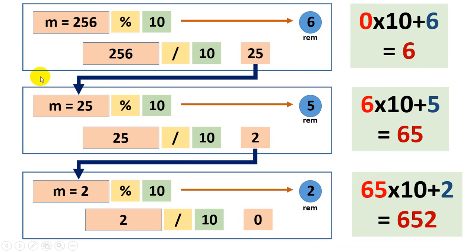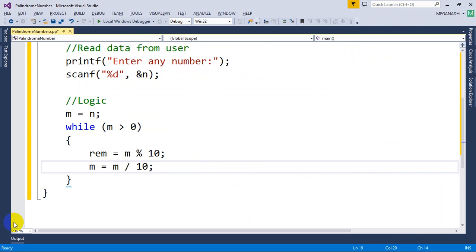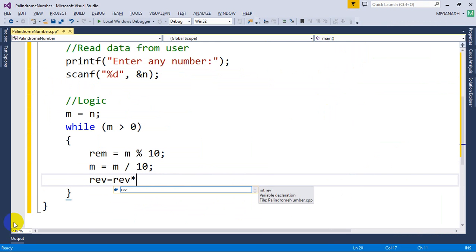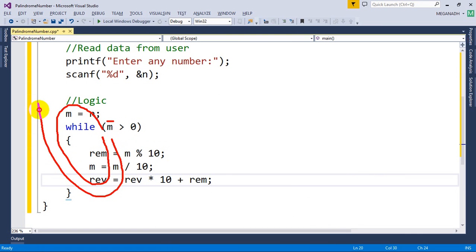Now you have to do this step so reverse is equal to reverse into 10 plus remainder. So I need to write here reverse is equal to reverse star 10 plus remainder. That's it. Now this process will continue three times so first m value will be 256 and then m value 25 and then m value 2 and then m value 0 that will stop.